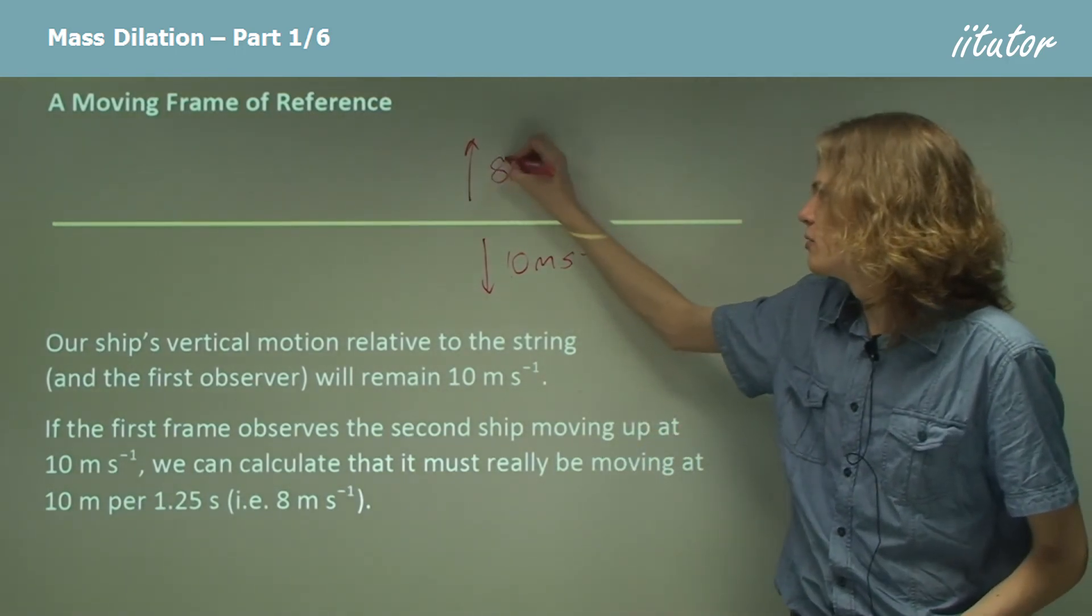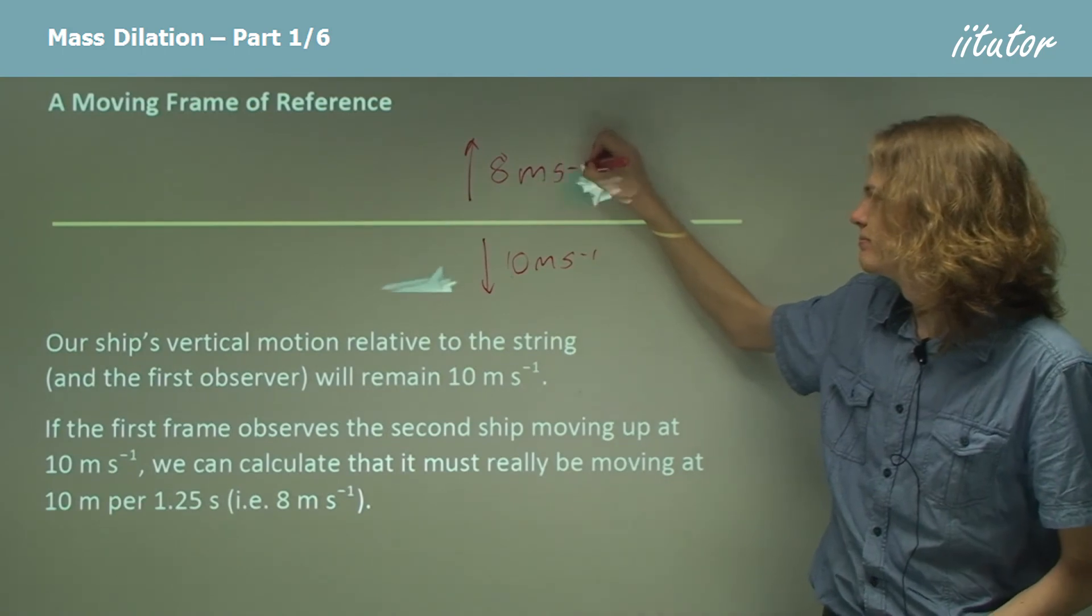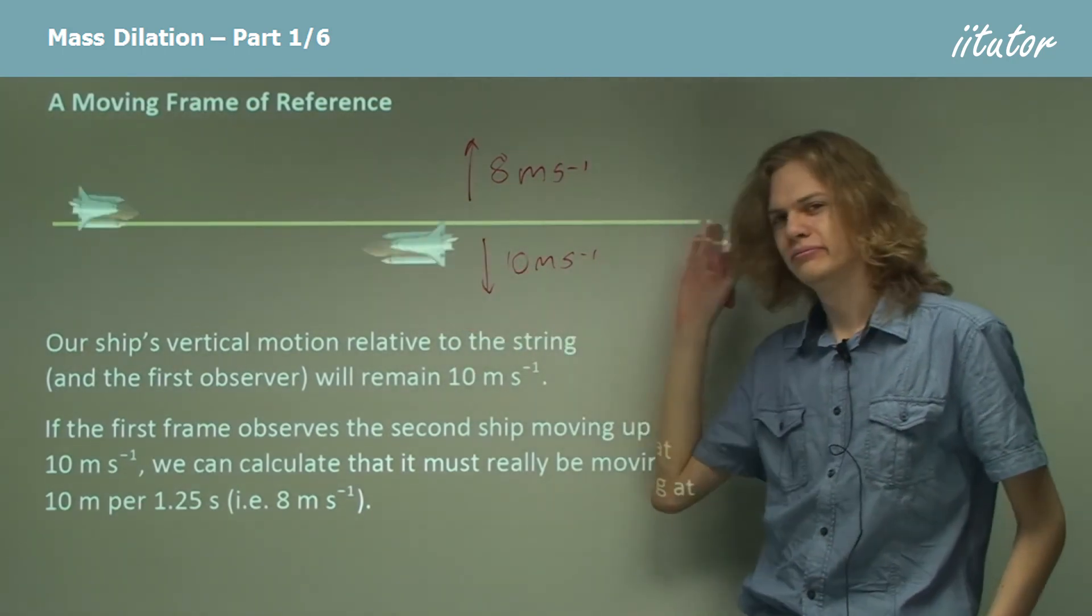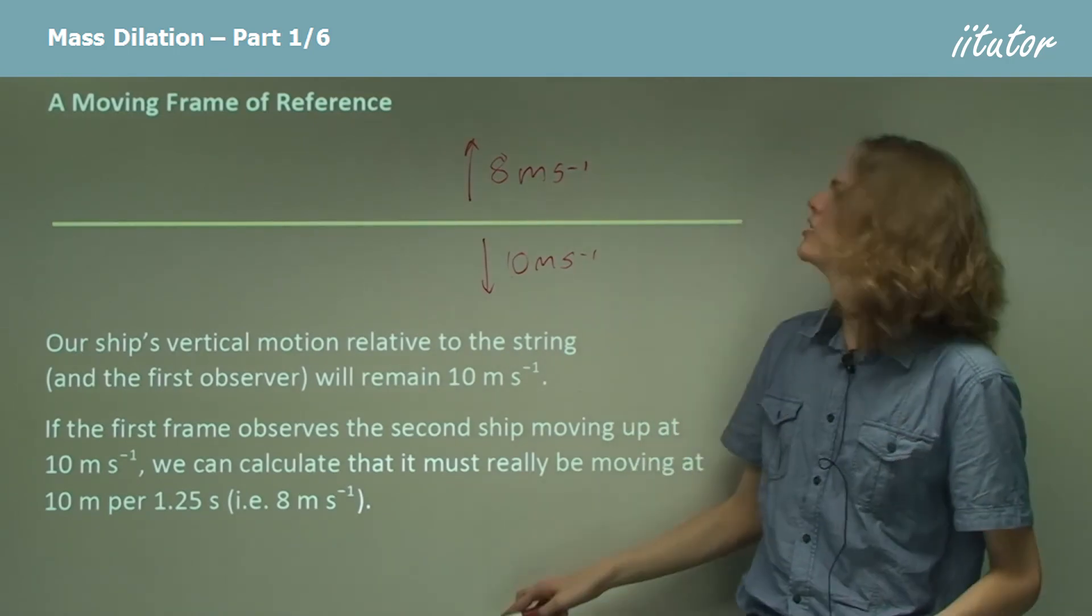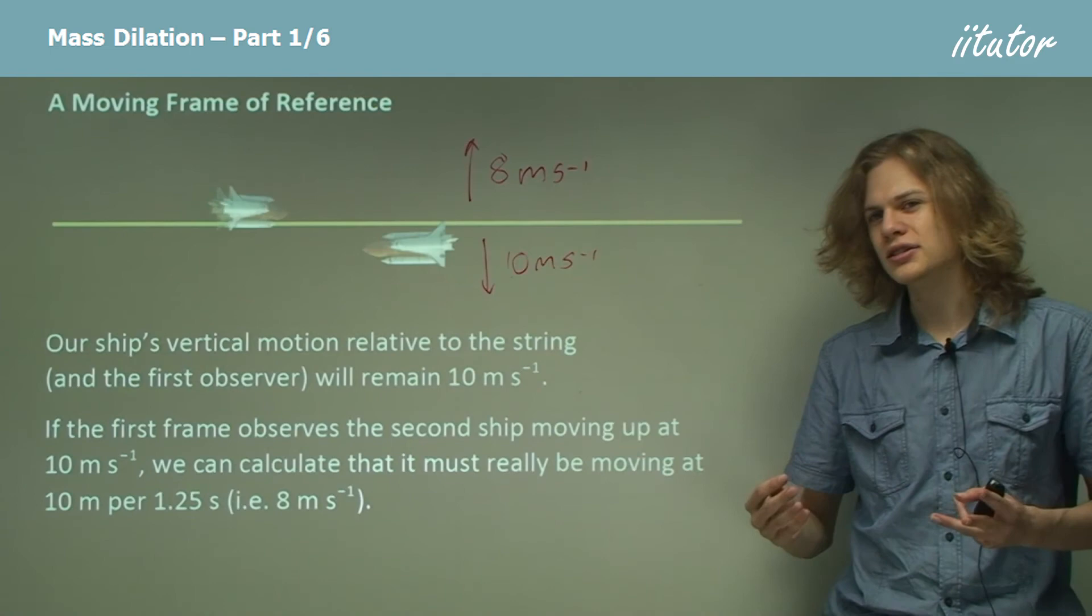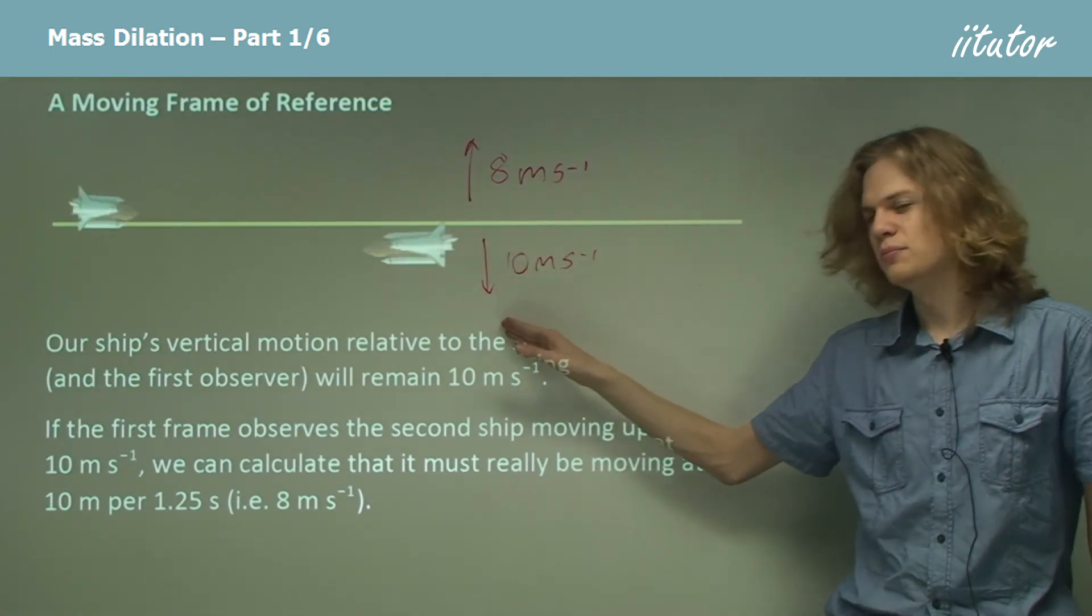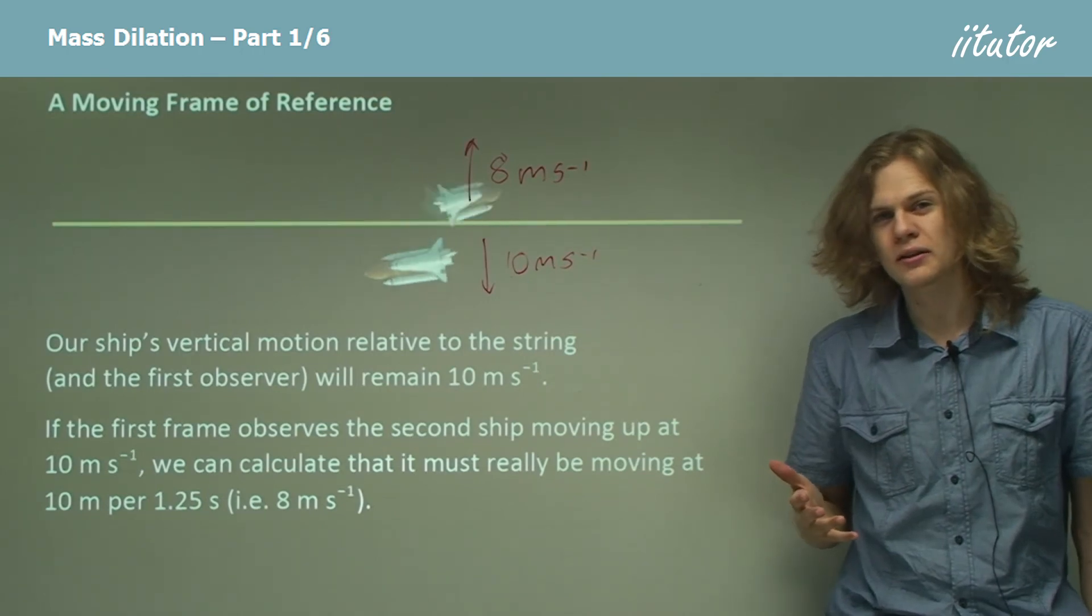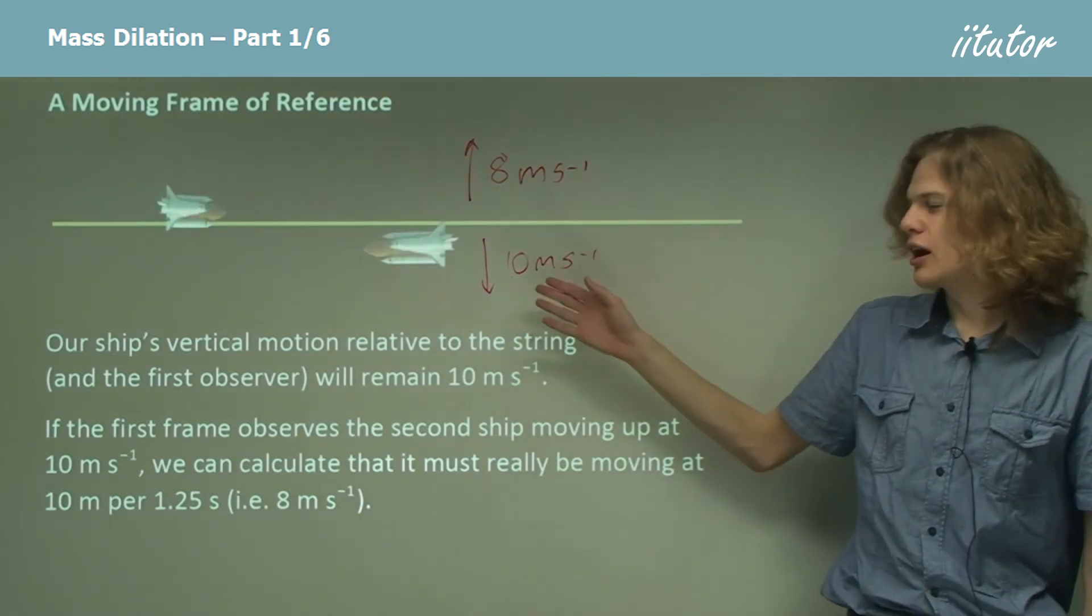Hello, now we have a problem. We've said that the x momentum is conserved, because that pretty much doesn't change. But now we've got two spaceships of equal mass. One's going down at 10 meters per second. One's going up at only 8 meters per second. So it looks like our momentum has changed.